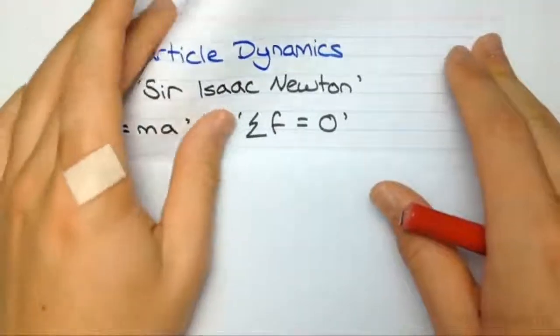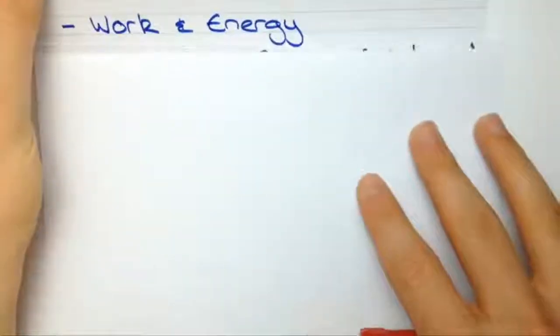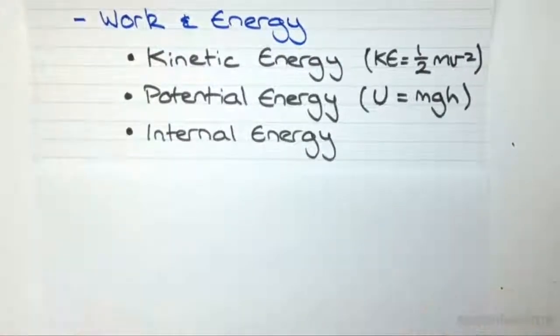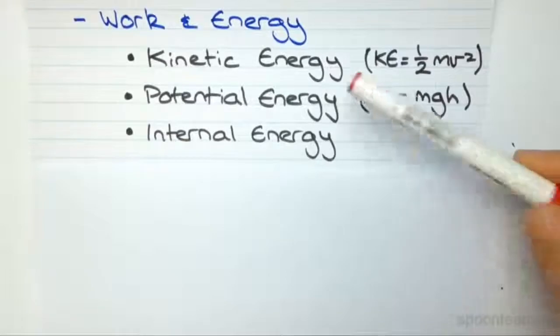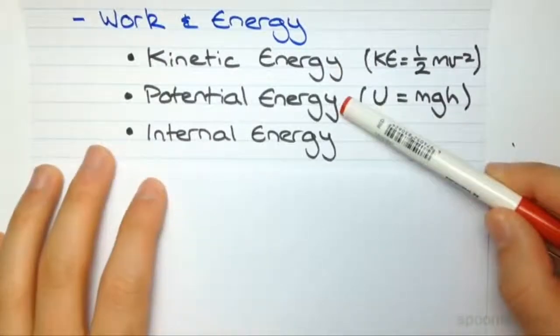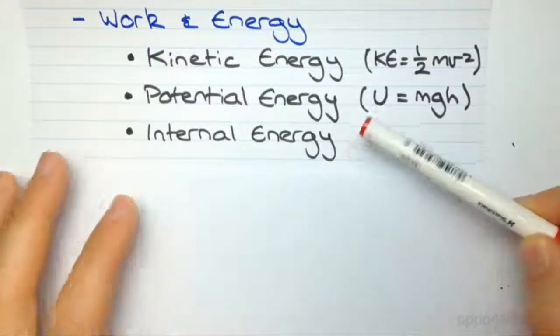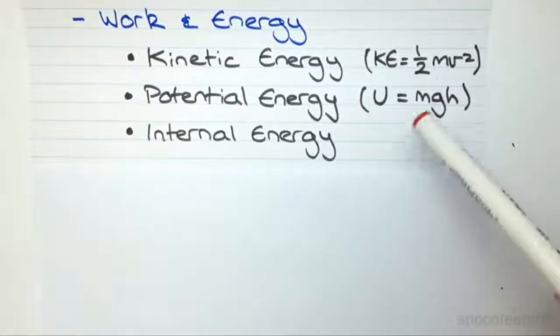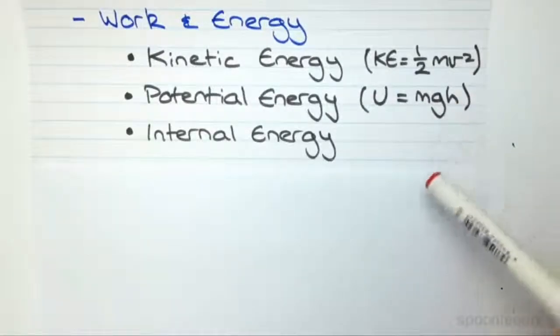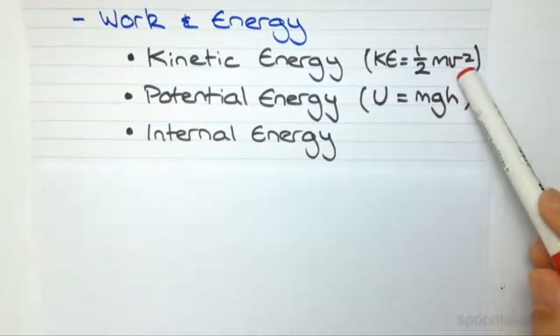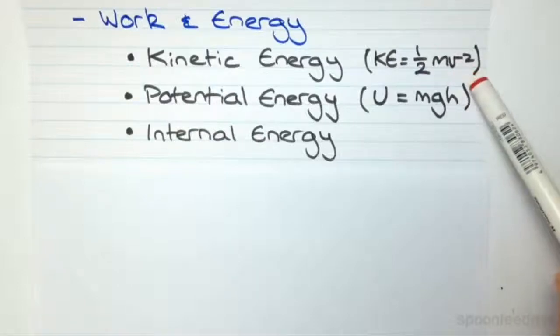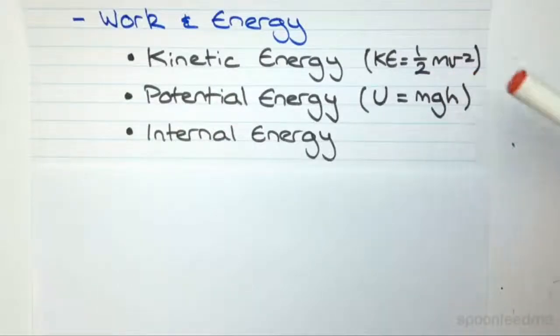But moving on to the next topic, which is work and energy. We'll be looking at the three types of energy listed here, kinetic energy, potential energy, and internal energy. We'll look at how these energy relate to motion of a body, and once again use some new equations to predict resulting motions.